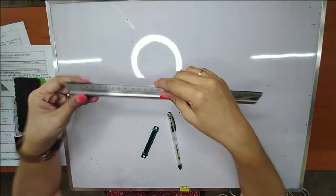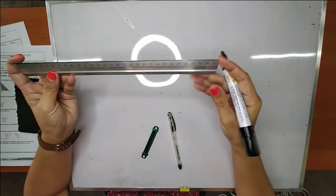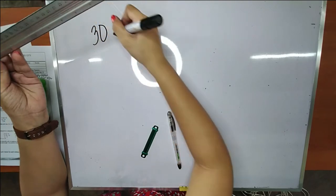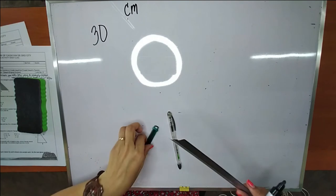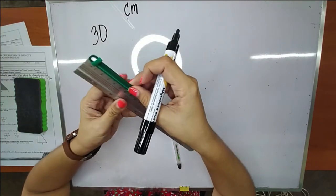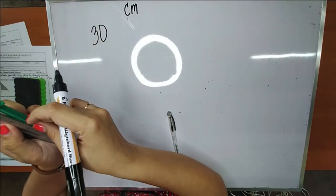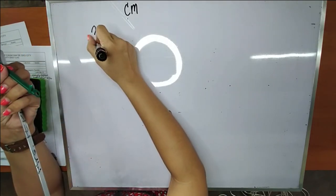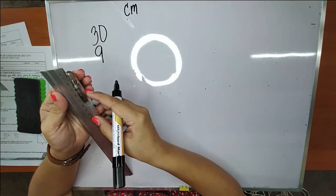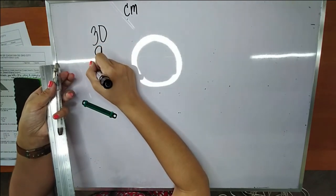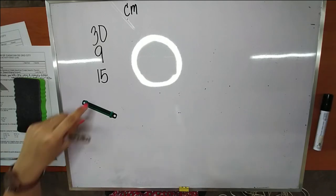Let's first measure each material using centimeters as our unit of measurement. This ruler is 30 centimeters. The fastener is approximately 9 centimeters. And the ball pen is approximately 15 centimeters. Let us see if these lengths can actually form a triangle.